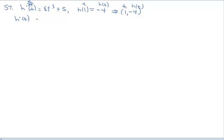Instead of using the prime notation, sometimes it's convenient to use a different notation when integrating. So I'm going to rewrite the equation, leaving a little space before the equal sign. I'm going to bring in the integral symbol on both sides of the equation. Notice I'm also missing the differential, so I'm going to put dt — I'm integrating with respect to dt on both sides. So I brought in the integral symbols and the same differential on both sides.